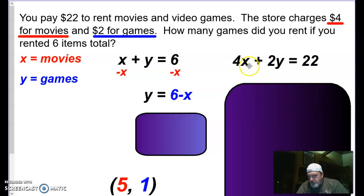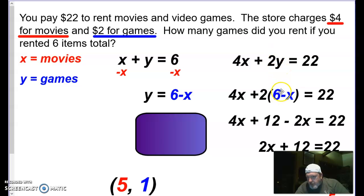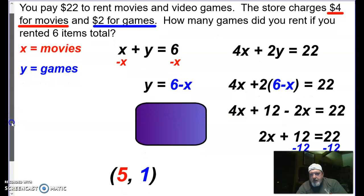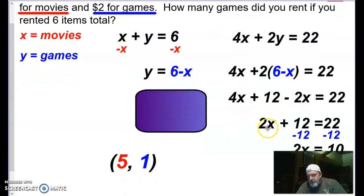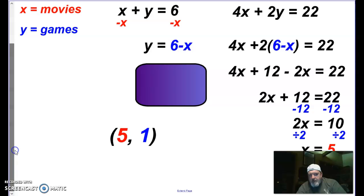They gave us the cost as well. So $4 per movie, $2 per game, and we spent a total of $22. Now that I know Y is six minus X, I am going to plug that in right there. And so when I go to solve my equation, I'll plug six minus X in for Y here. Again, we're going to distribute. Two times six is 12. Two times negative X is negative 2X. I can combine some like terms. So 4X minus 2X will give me 2X plus 12. Subtract the 12 from both sides.